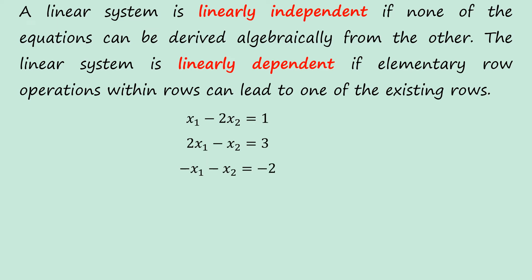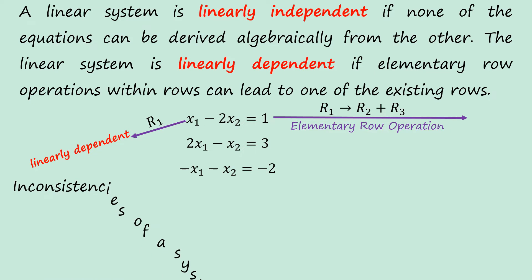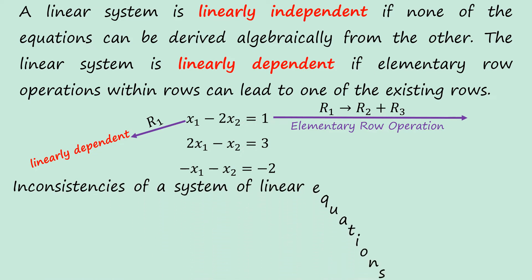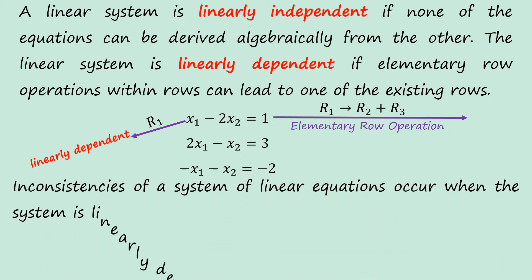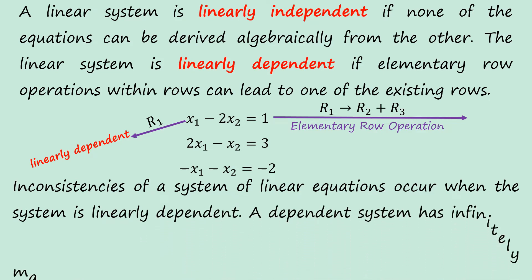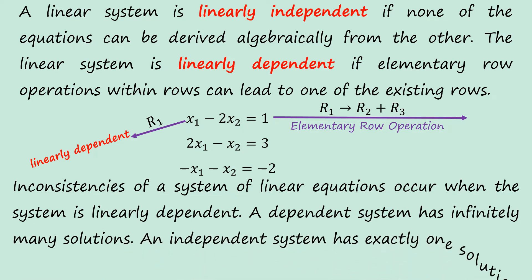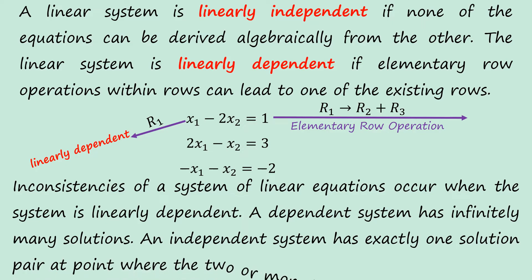Let's consider this example. We can see that we can apply elementary row operations to row 1 and row 2. When we add them together, we have R1 equal to R2 plus R3, which means that R1 is linearly dependent. Inconsistencies of a system occur when the system is linearly dependent. A dependent system has infinitely many solutions, while an independent system has exactly one solution, paired at the point where two or more lines intersect.